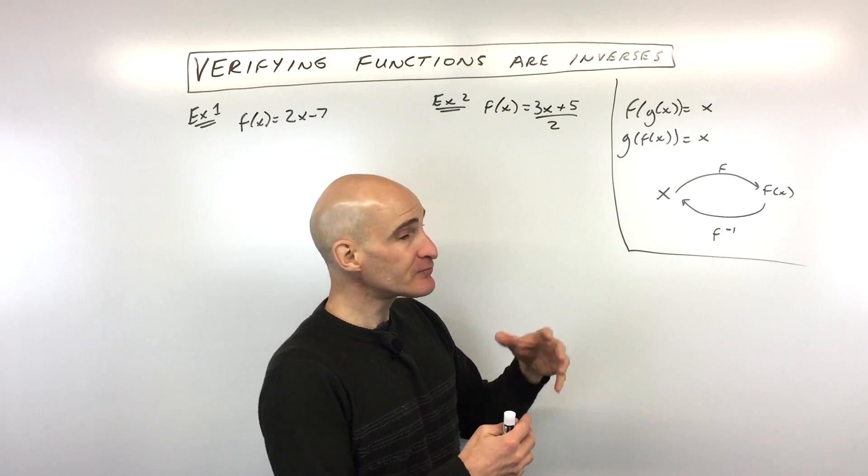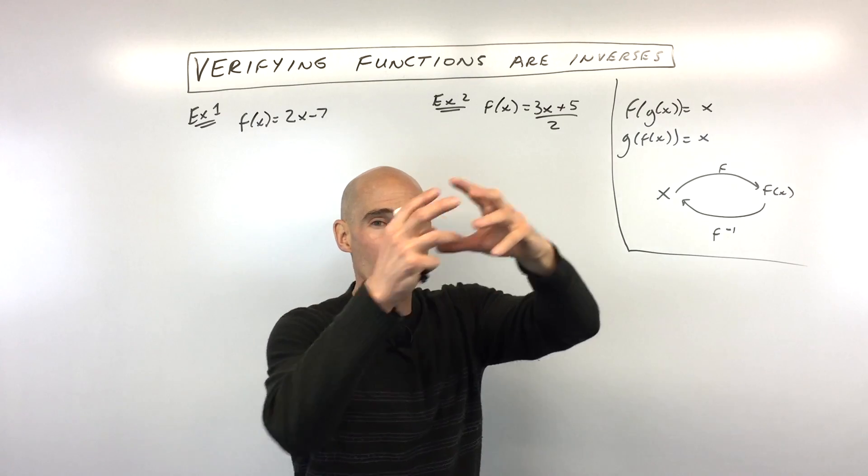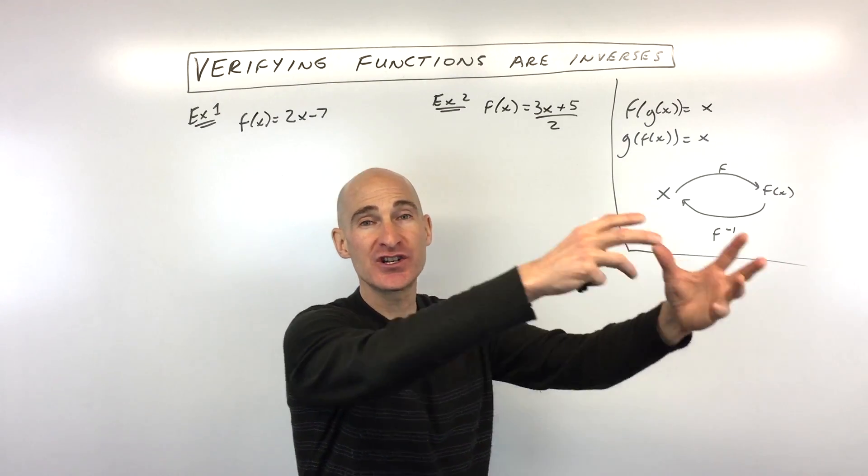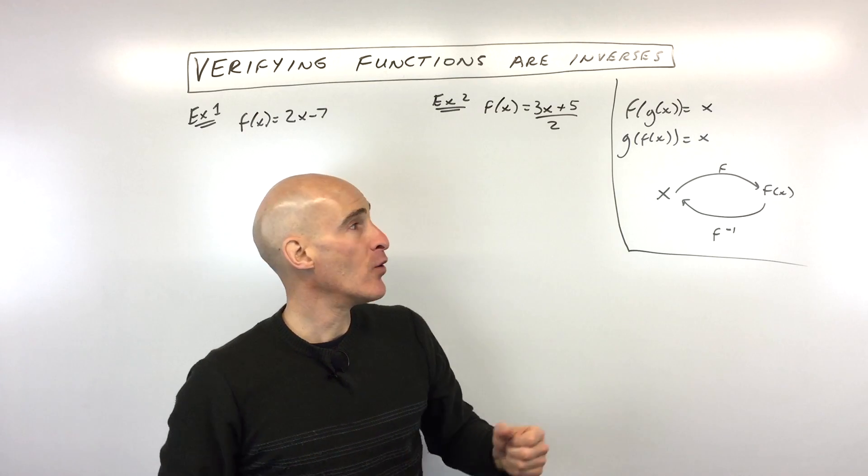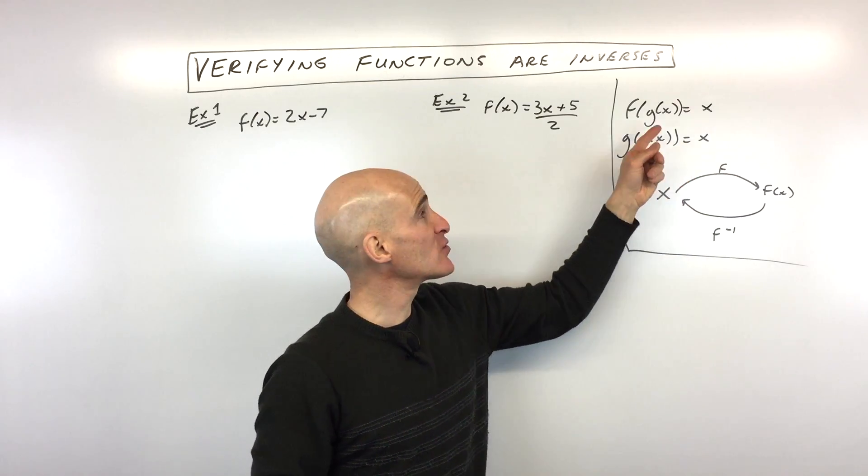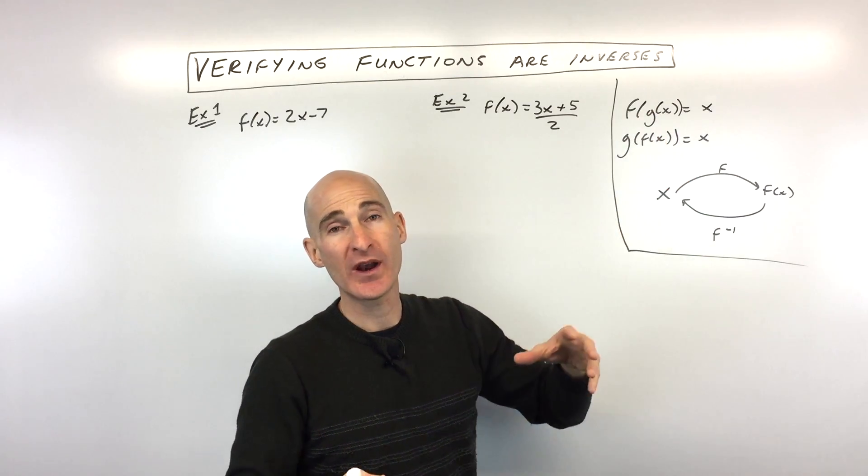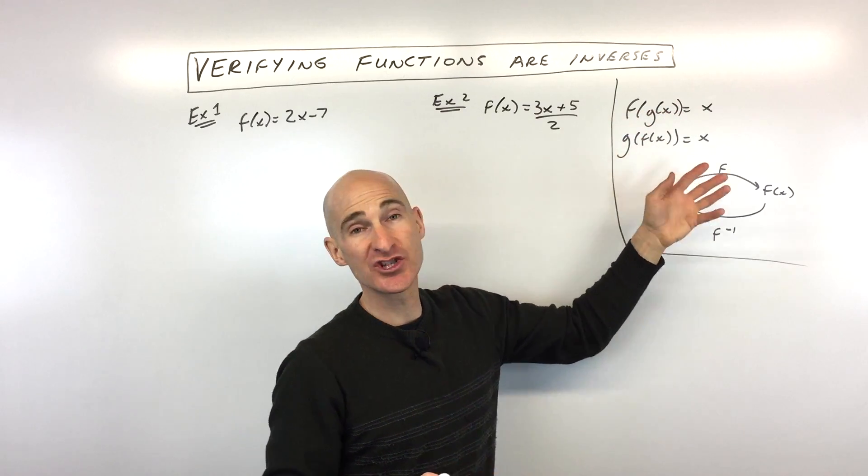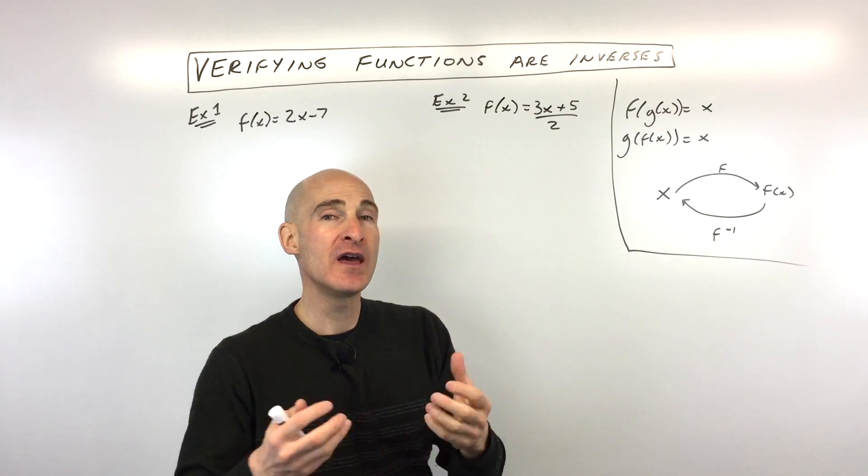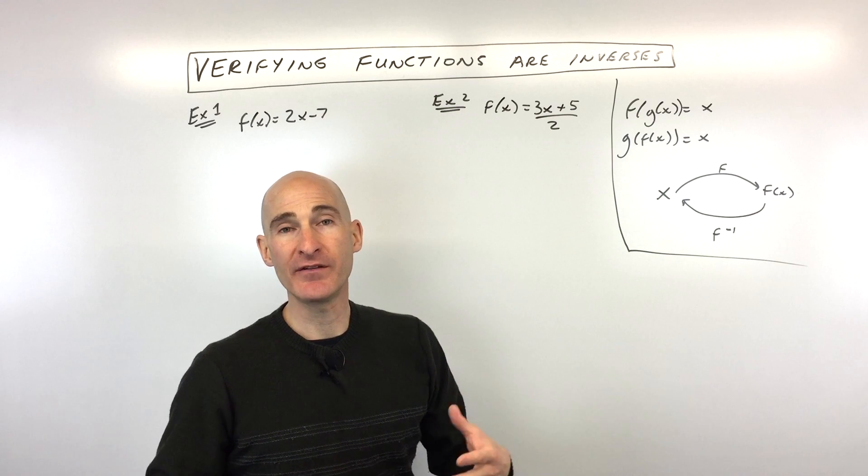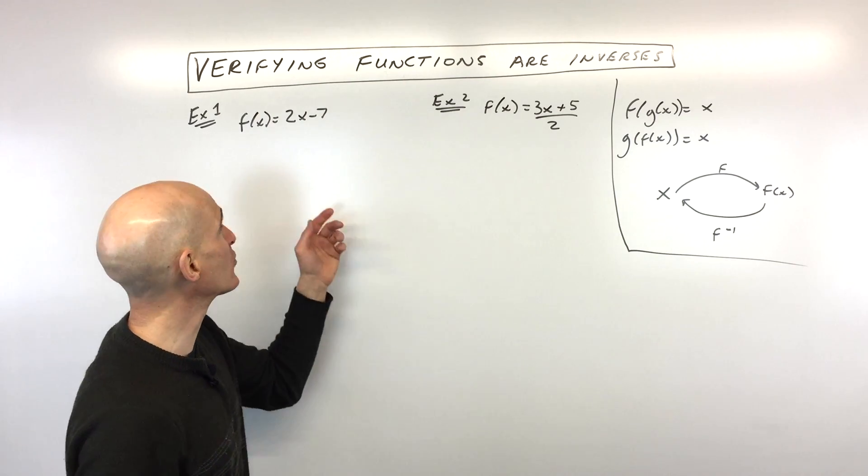Again, all that's saying is that we put in X, we get our output, we put it into the other function, and it takes us back to the original quantity, which was X. And we want to make sure we do it in both orders. So you want to do both F of G of X as well as G of F of X. If you get X for both, then you've successfully proved that the functions are inverses of each other.